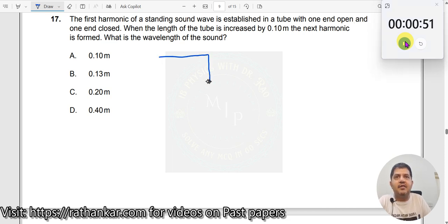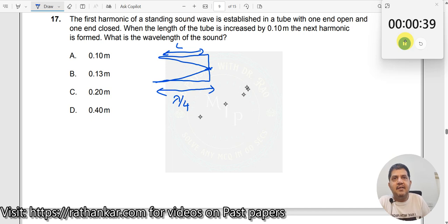Let me write down a tube. This is how it looks like. First harmonic looks like this. So the length between these two would be equal to lambda by 4. If L is the length of the tube, I will be able to write L is equal to lambda by 4.